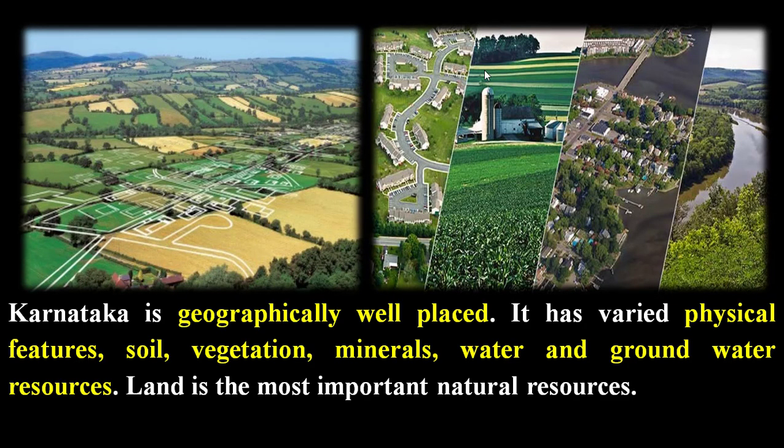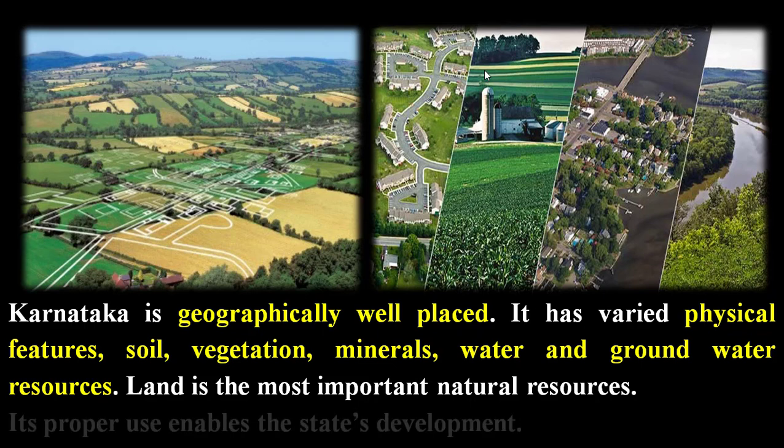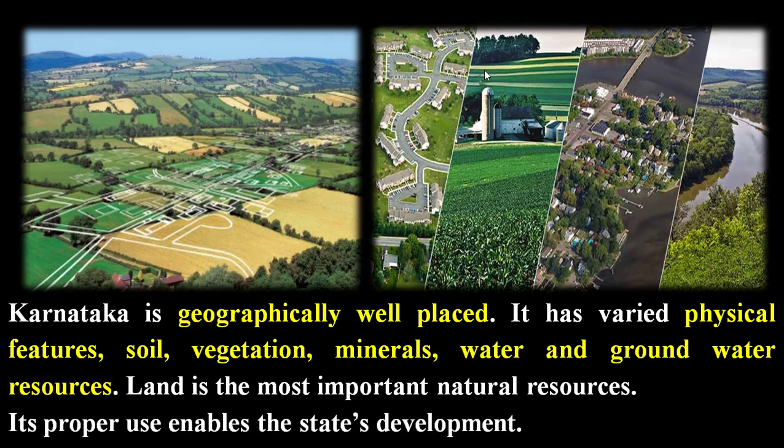Introduction for the lesson Land Resources of Karnataka. Karnataka is geographically well placed. It has varied physical features — soil, vegetation, minerals, water and groundwater resources. The physical features include the Malnad region, Maidan region, and coastal plain. Types of soils include black soil, laterite soil, red soil, and alluvial soil. Upcoming topics will cover vegetation, animals, important minerals, water resources, and groundwater resources. Among these, land is the most important natural resource, and its proper use enables the state's development.